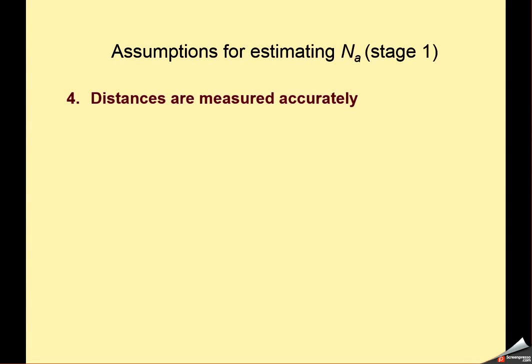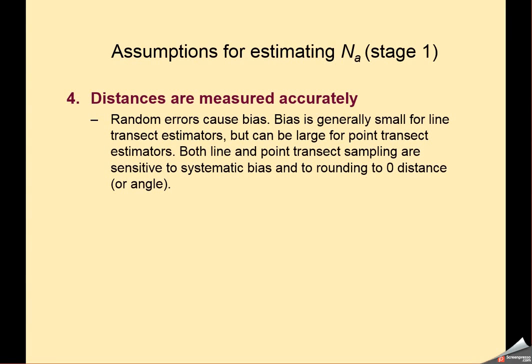Another assumption associated with trying to do a good job of estimating n sub a is that you measure distances correctly. Now, you would think that if sometimes you overestimate and sometimes you underestimate, those things ought to cancel one another out. That's not necessarily the case. Even if you have random errors, you create bias. And that bias is a most considerable problem for you when you have errors in small distances when you round. Rounding is a problem.